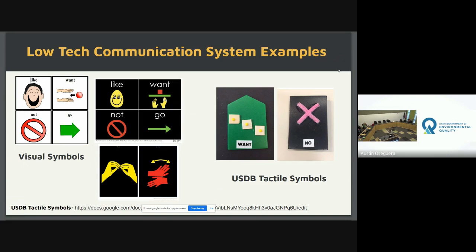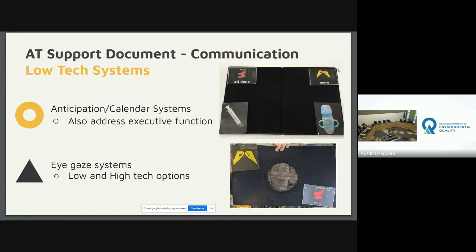A question from online asked about the mesh boards — where do you get them? Most of the time we've made them. This specific one can be requested as a material from USDB for a visually impaired student. You can also find them online, or really create them with anything. If using Velcro, put felt over any type of board — cardboard, anything more sturdy. You can purchase them in thick plastic, or just be creative. This specific mesh-background board was made by one of our staff members.